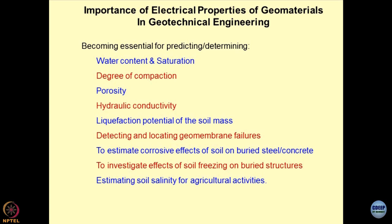There are some efforts which have been made to obtain the liquefaction potential of the soil mass. People have tried to determine the in-situ density and pore pressures which build up in the soil mass by using electrical sensors. Detecting and locating geomembrane failures is also an important application. The basal liners for landfills, when they get punctured because of placement and compaction, present a major issue — there is no way to establish whether the geomembranes have failed or got punctured while placing them in the form of GCLs or CCLs.